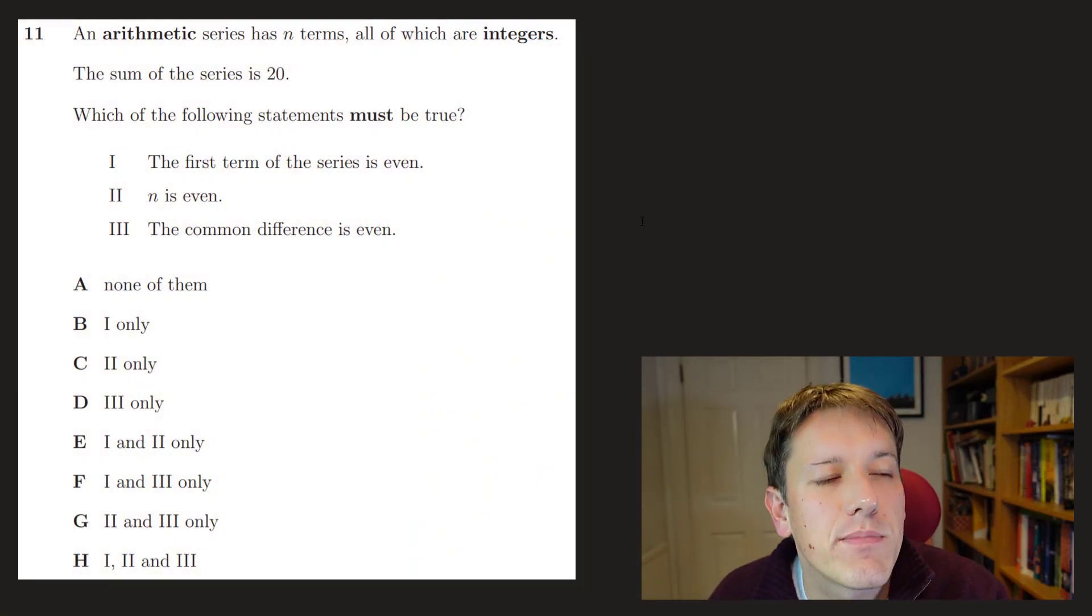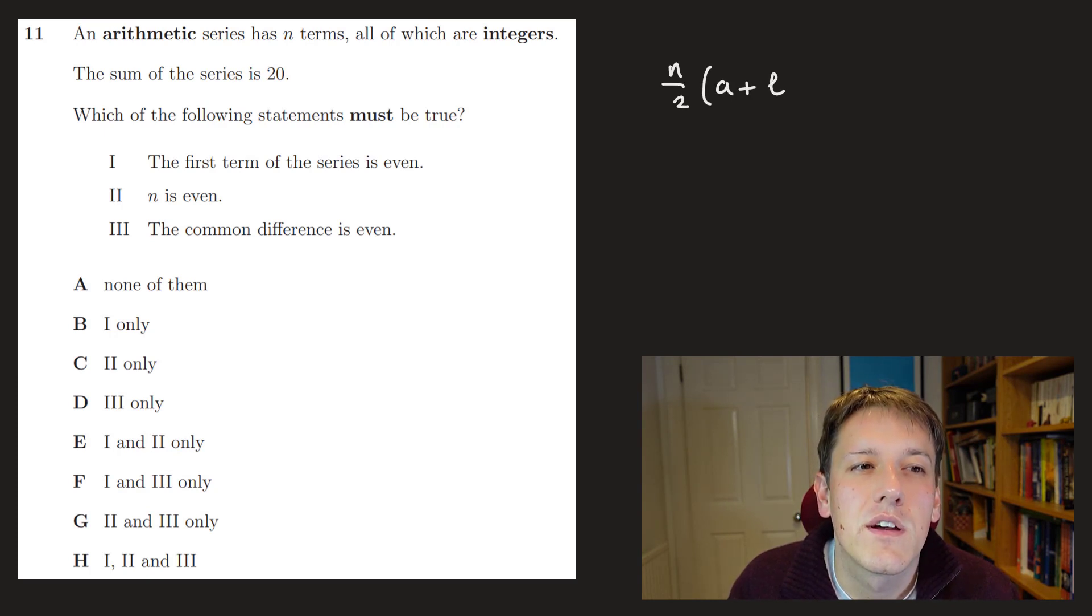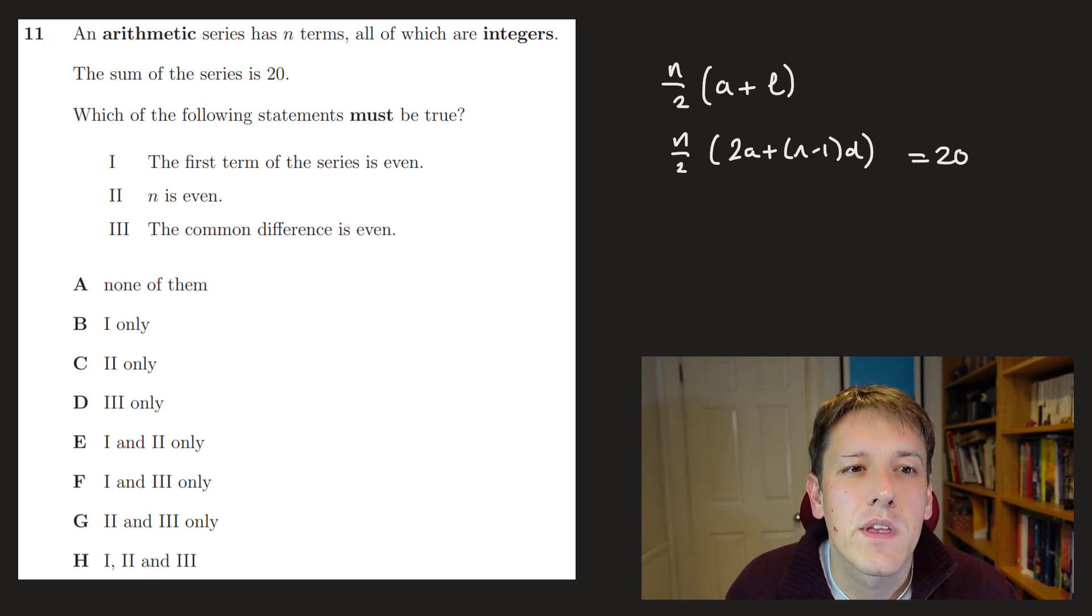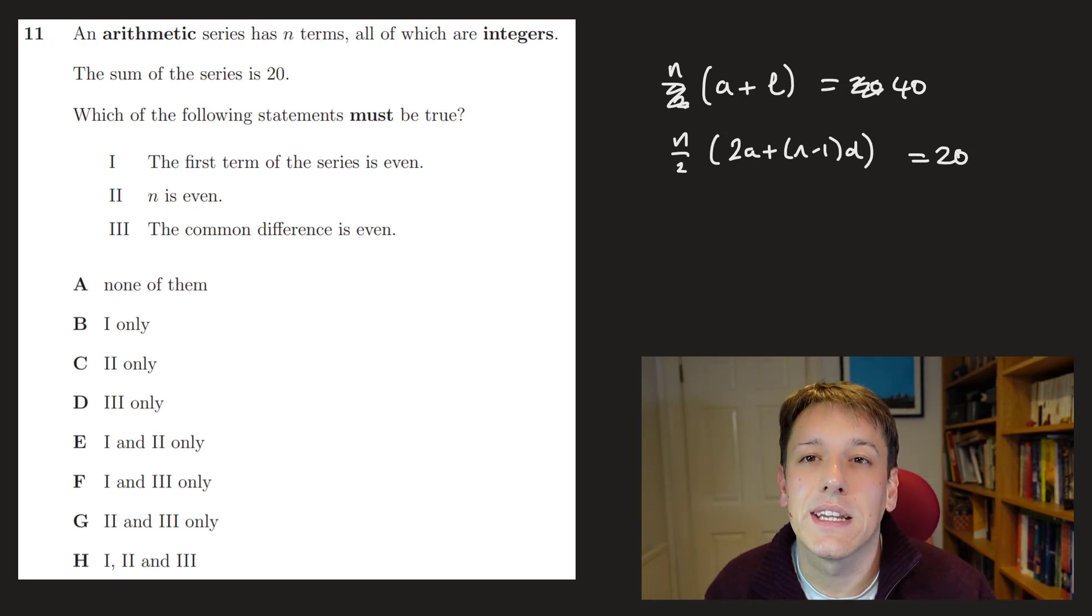So in question 11 we've got an arithmetic series with n terms, all of which are integers, and the sum of the series is 20, and we want to know which of the following statements must be true. So you might start here by thinking about the formula for the sum of an arithmetic series, it's just n over 2 times the first term plus the last term, or equivalently n over 2, 2a plus n minus 1d. And so what we need here is for this to be 20.